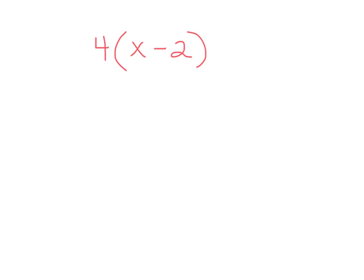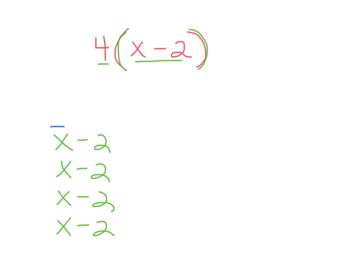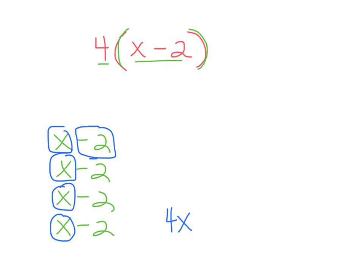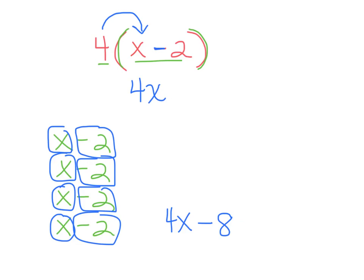Here's another one: 4 times (x minus 2). Drawing a picture: 4 groups of x minus 2 gives me 4 x's and negative 2 four times, which is negative 8 — so that's 4x minus 8. Using the distributive property: 4 times x is 4x. Keep the minus symbol. Then 4 times 2 is 8. So I simplify that to 4x minus 8.